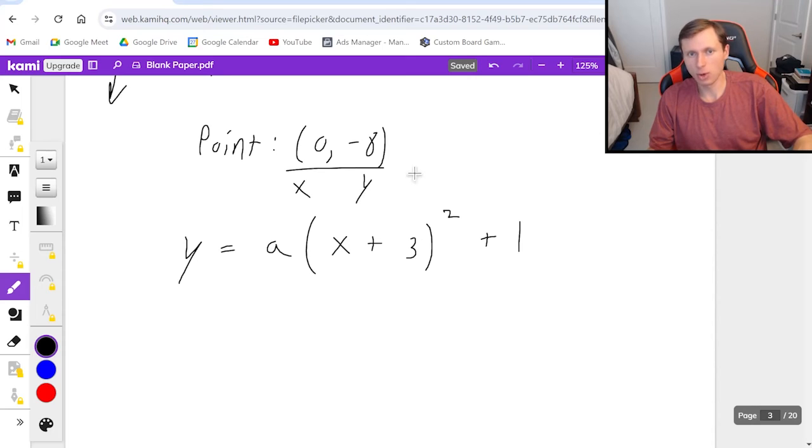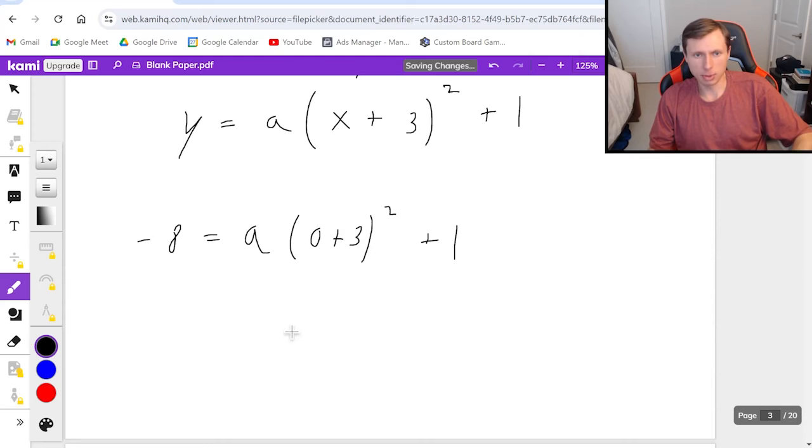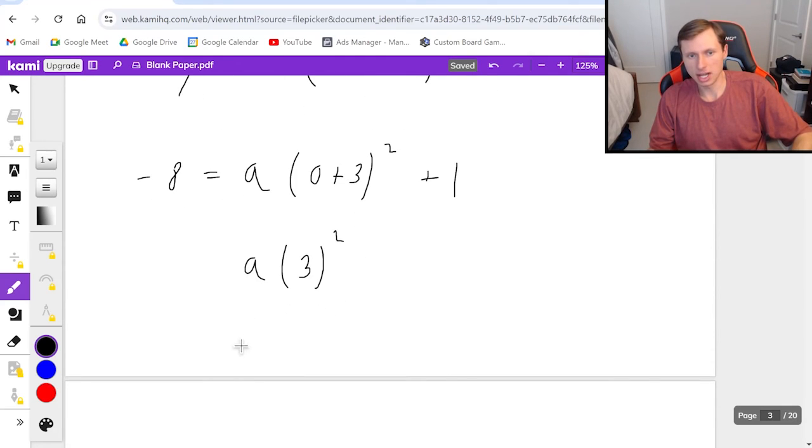So negative 8 equals a times 0 plus 3 squared plus 1. So again, I'll reduce the thing in parentheses first. 0 plus 3 is 3. 3 squared is 9. So this is 9a, or negative 8 equals 9a plus 1.